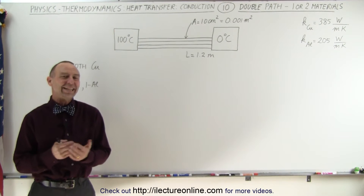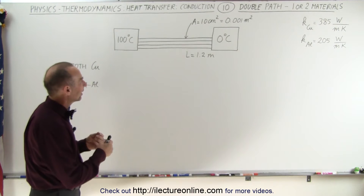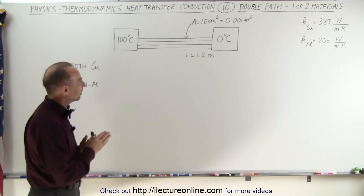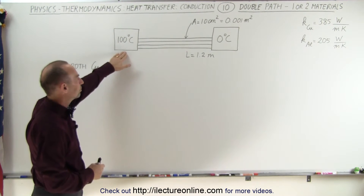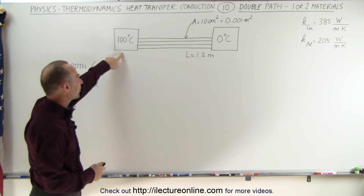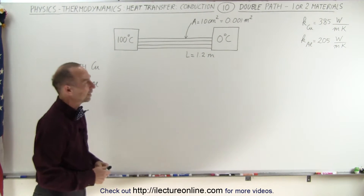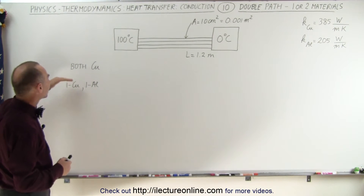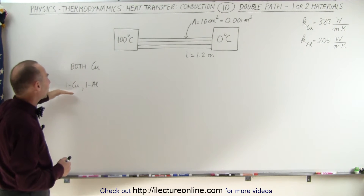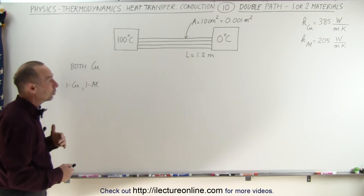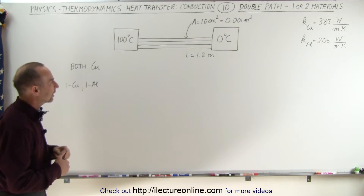Welcome to our lecture online. In this example we're going to have two conducting paths, the same cross-section, same length, between the same two endpoints — we have a source of heat here and we have a heat sink on the other side. In the first example we're going to use both of them being copper. In the second example we're going to make one copper and one aluminum, as they have different heat conductivity constants.